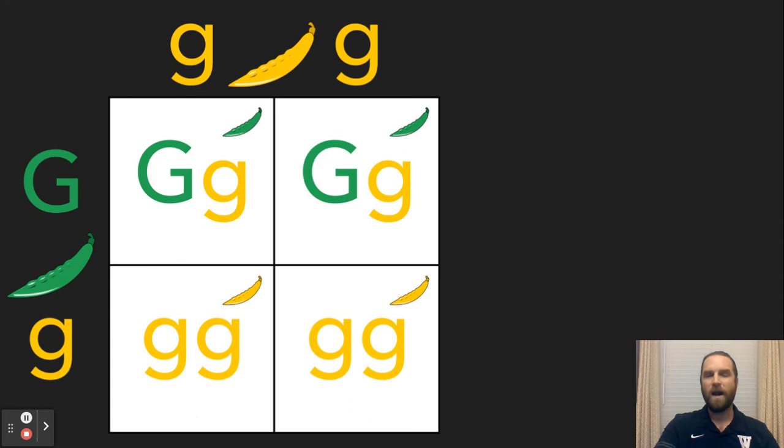So that parent can give either a big G or a little g. On the top, we have that yellow seed pod. It's got two recessive copies of the yellow gene there. So you see two lowercase g's in place there.